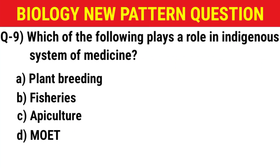Next question: Which of the following plays a role in the indigenous system of medicine? (A) plant breeding, (B) fisheries, (C) apiculture, (D) moed. The correct answer is option C: apiculture.